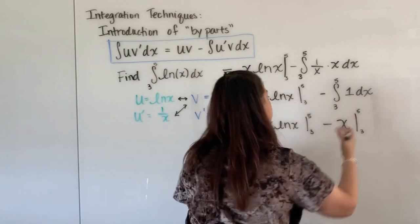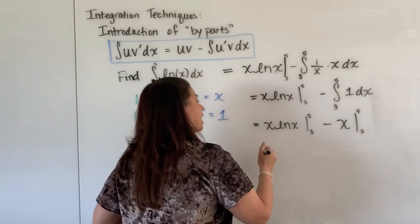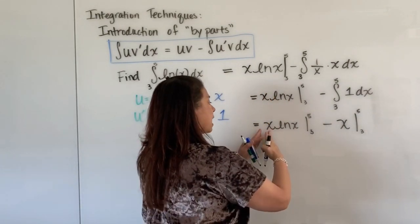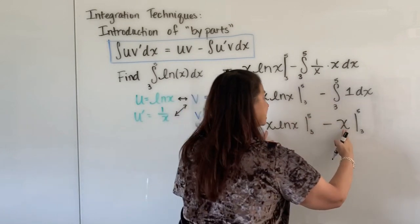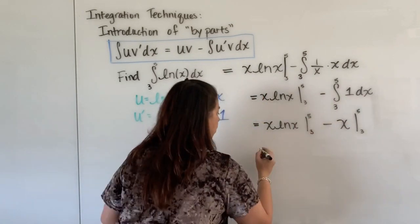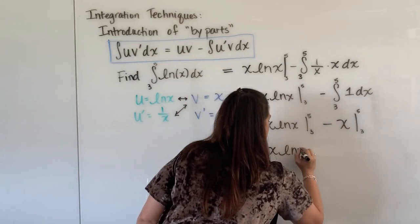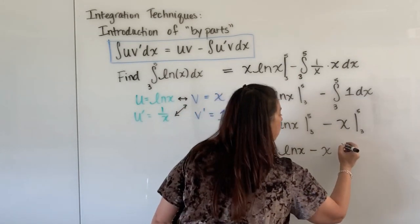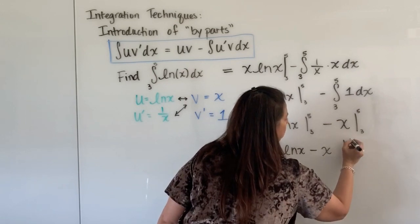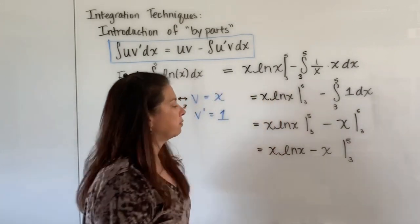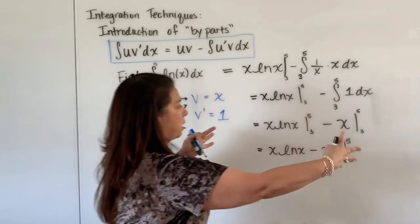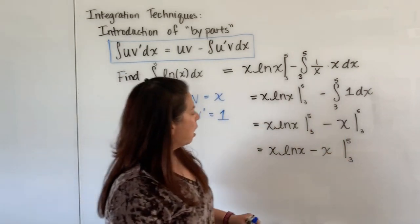Okay, by the way, I could actually write this notation as just these two pieces x natural log x minus x whole thing evaluated from 3 to 5. So let's do that. We have x natural log x subtract an x and that whole thing is being evaluated from 3 to 5. So we don't have to write it necessarily on each piece. We could write the whole thing.